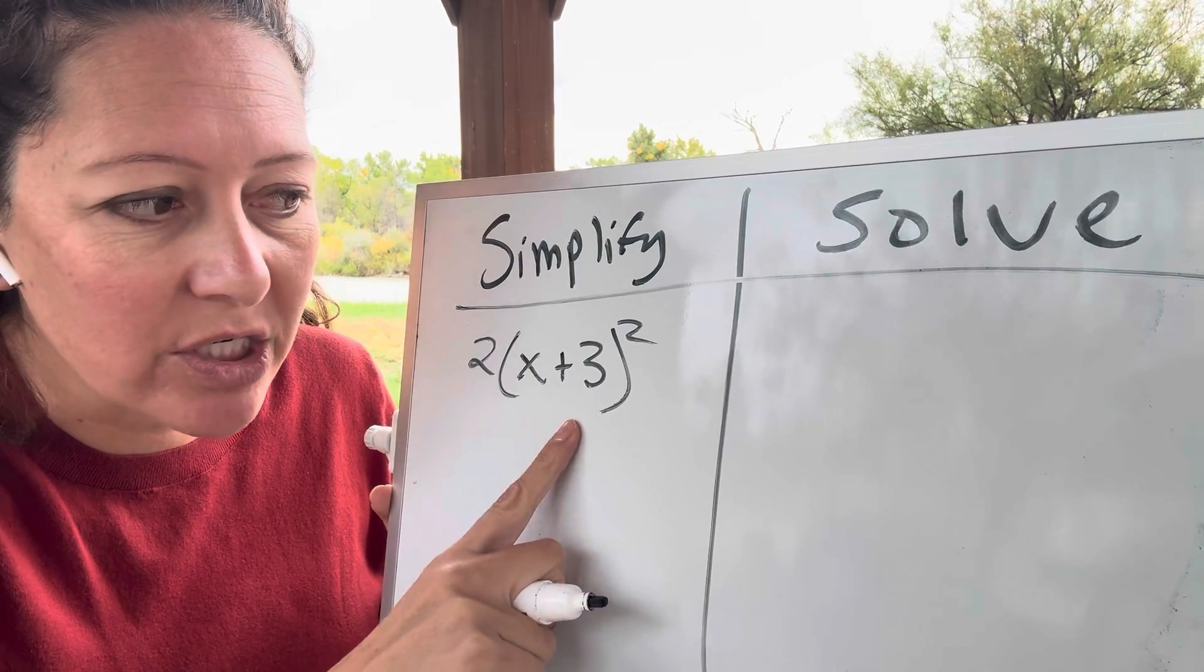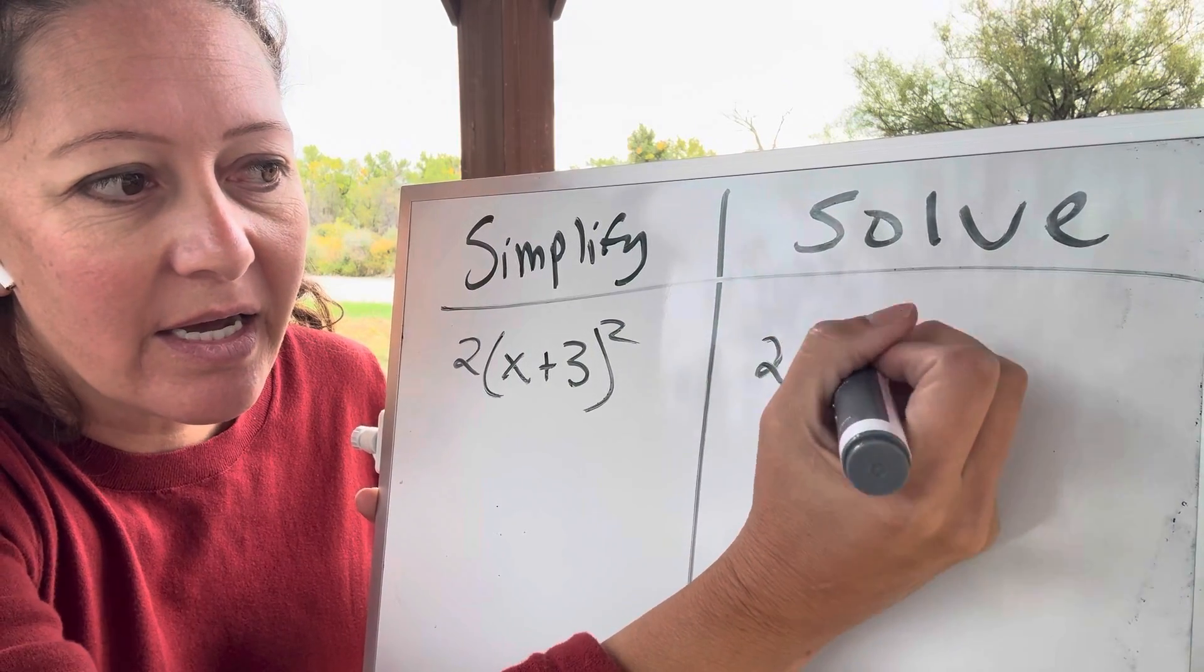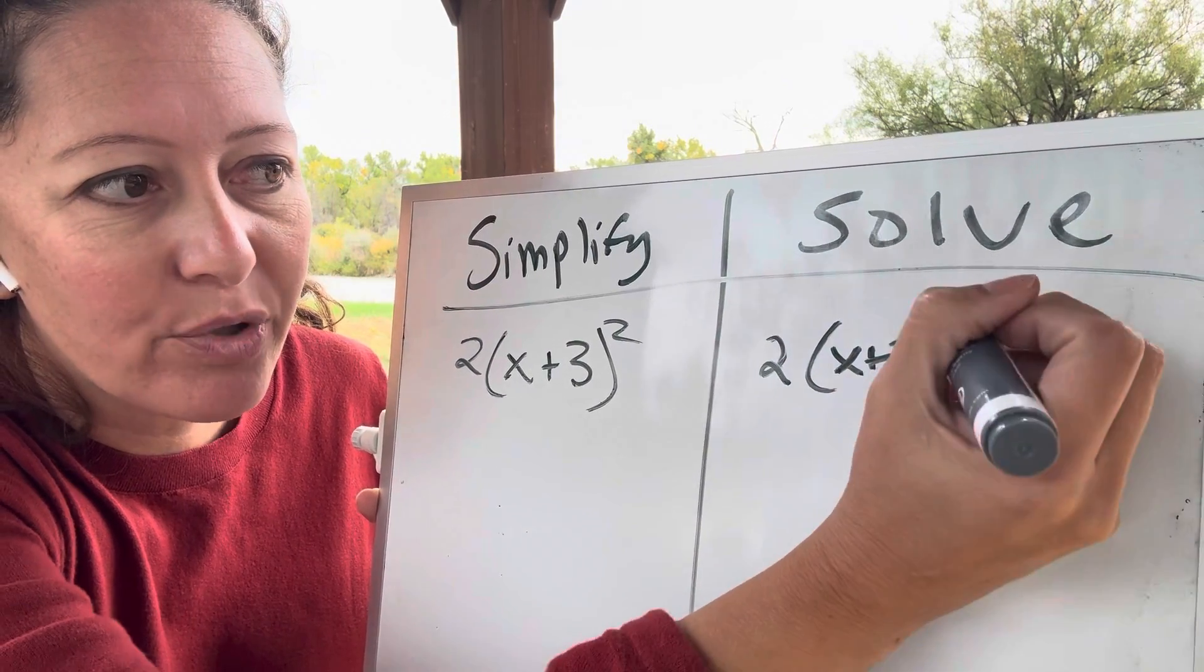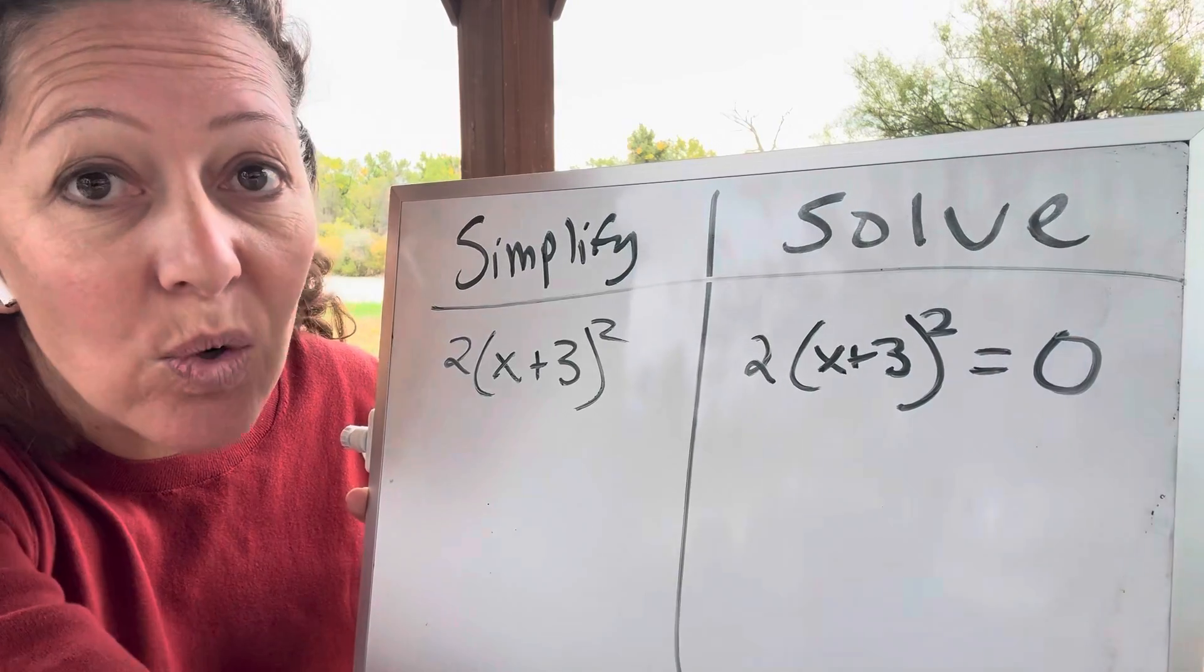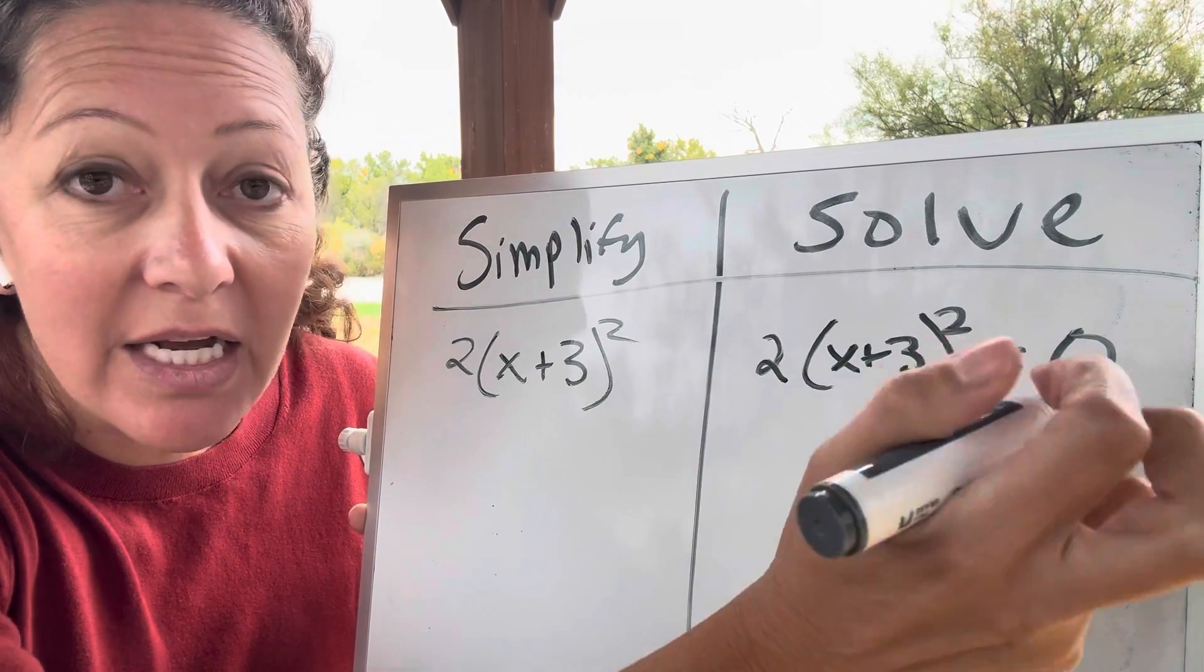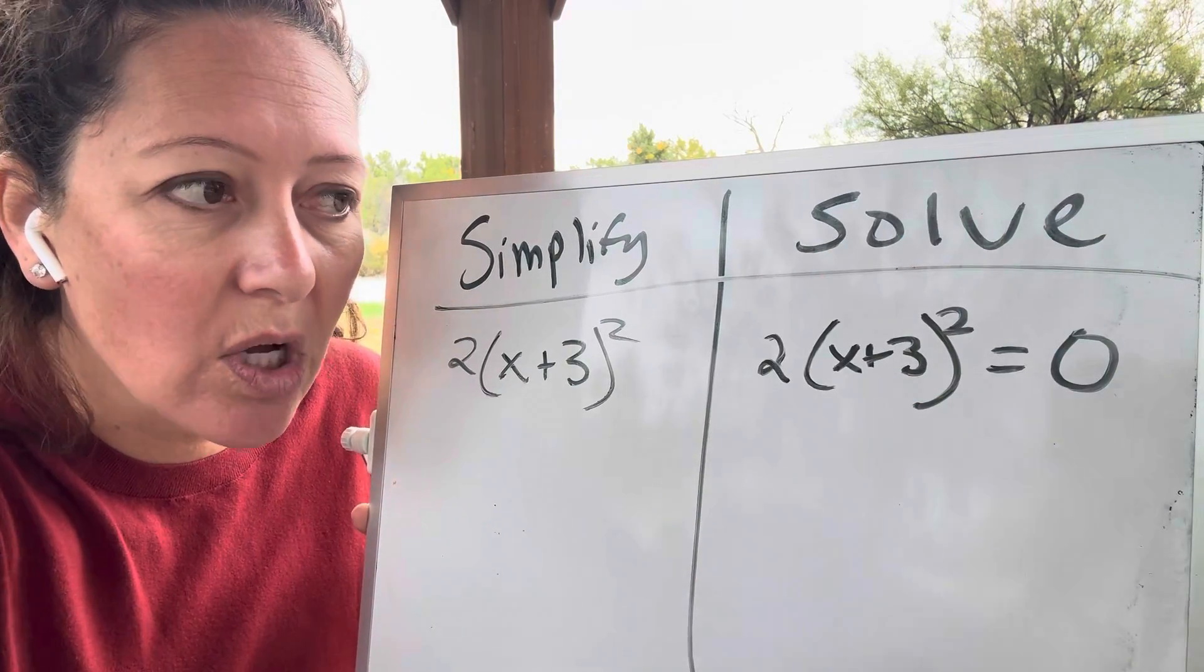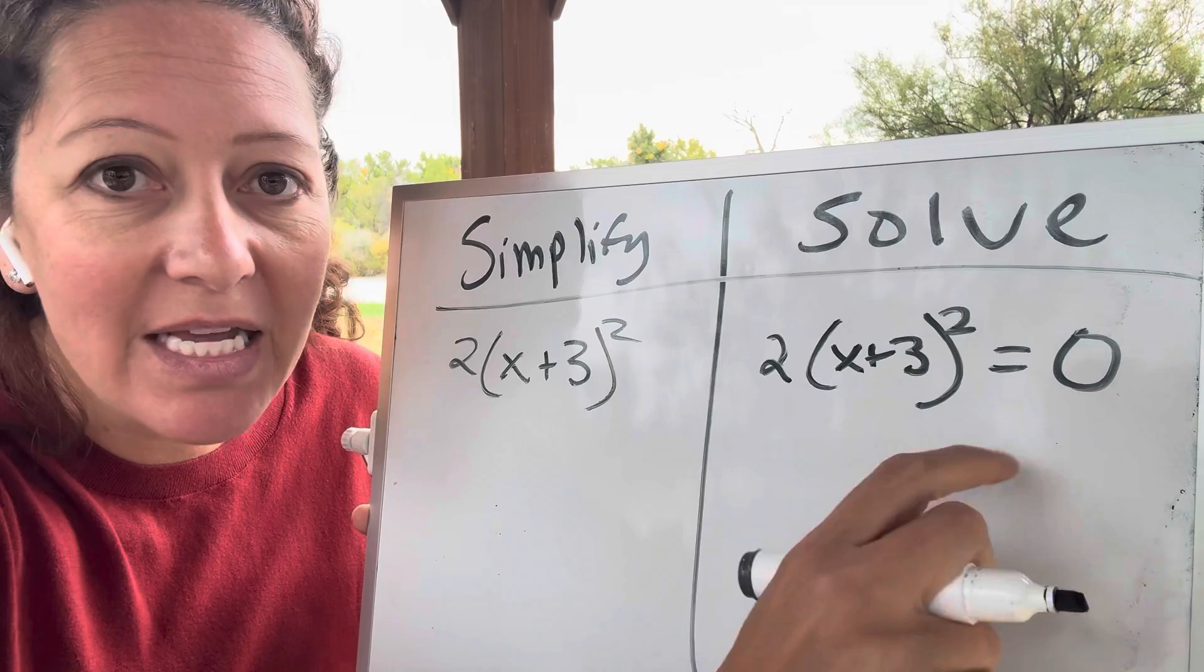But this isn't an actual equation. In order to make this an equation, let's say I put it like this and I set it equal to 0. Now it's an equation because it has that equal sign. You could also have an inequality sign and it would still function as something to solve. So in this case, I can solve.